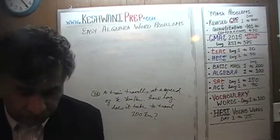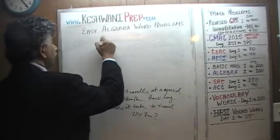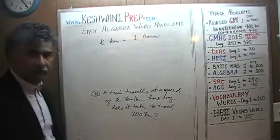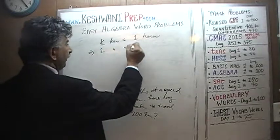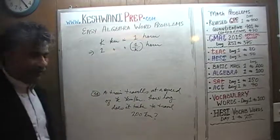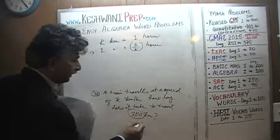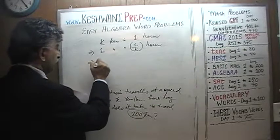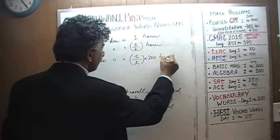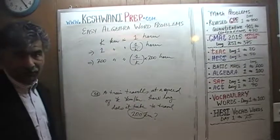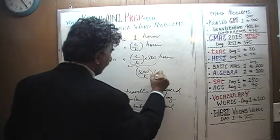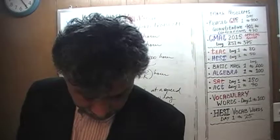Same logic: we are going K kilometers in one hour. That implies we must be going one kilometer in one K-th of an hour. We want to go 200 kilometers, so 200 kilometers should take 200 times that amount — 200 over K hours. The answer is 200 over K hours.